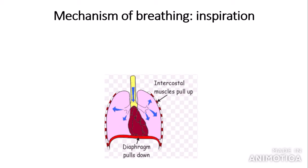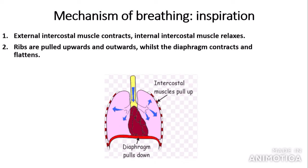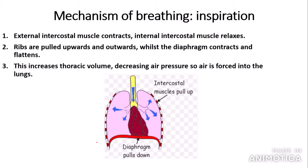You need to know about the mechanism of breathing. During inspiration, the external intercostal muscles contract whilst the internal intercostal muscles relax. This means the ribs are pulled upwards and outwards whilst the diaphragm contracts and flattens — it is pulled down. This increases the thoracic volume, which is the chest cavity. The increased volume means air pressure decreases, so air is forced into the lungs down a pressure gradient, filling the lungs with air.